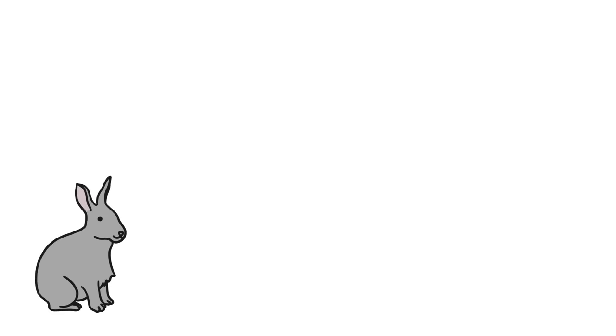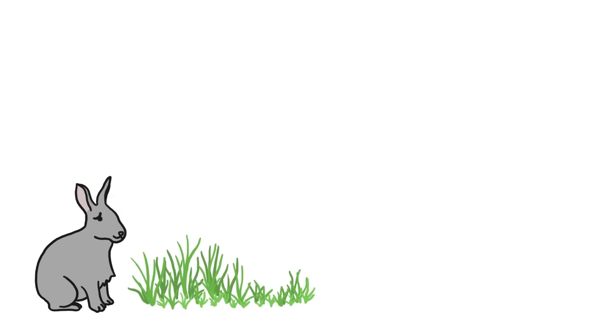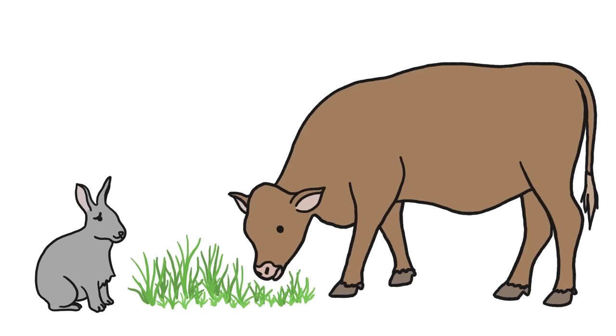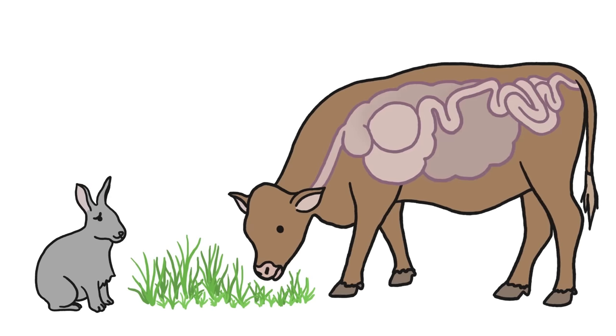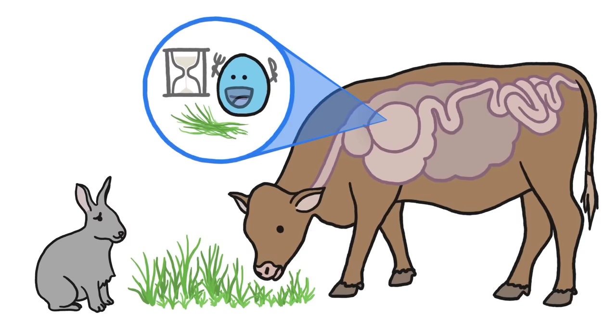Other animals absolutely have to eat their own poop. For example, rabbits eat lots of the same foods that ruminants like cows do. But while cows have long, complex digestive tracts that give the microbes inside time to break down the tough plant cells, rabbits have much shorter guts.